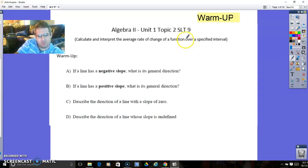Welcome back to Mr. P Helps with Algebra 2. This is Unit 1, Topic 2, SLT number 9. For the warm-up: if a line has a negative slope, what is its general direction? It's going down. Positive slopes go up. A line with zero slope would be straight across, that's horizontal. And a line whose slope is undefined would be straight up and down, that's vertical.